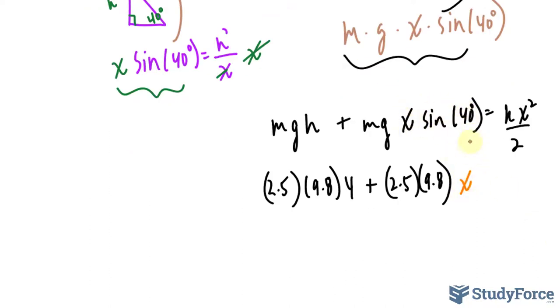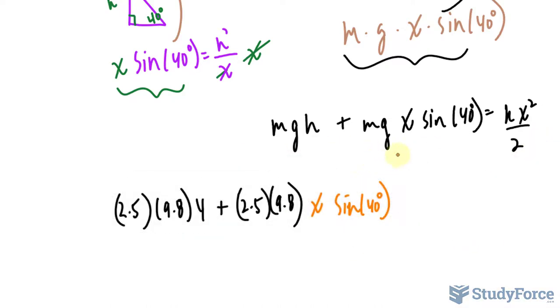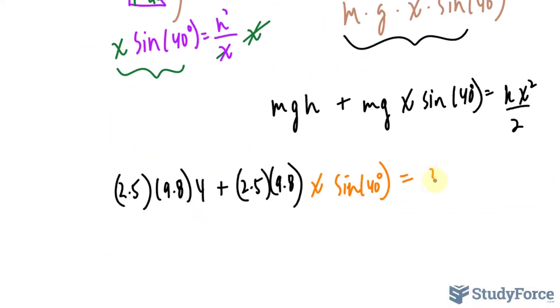x is what I'm looking for, and sine 40 can be calculated with a calculator. Let me move this so I have room for my equation. And that's equal to k. That's given in the question as 300 newtons per meter. x is what we're looking for over 2.